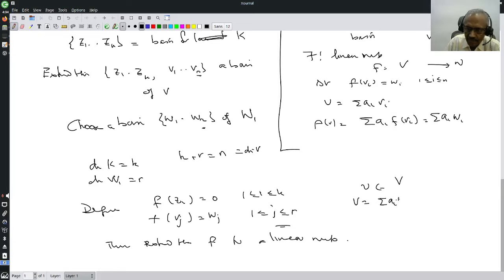...and define F of V to be summation Ai F of Zi, which is 0, plus summation Bj F of Vj, which is Wj. So that is the construction. We have constructed this linear map.